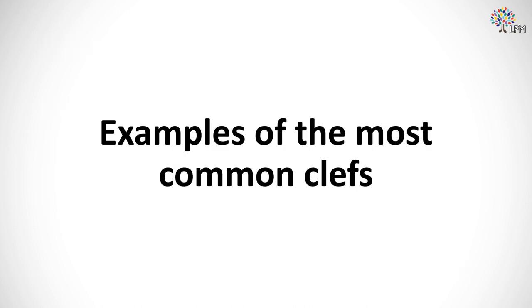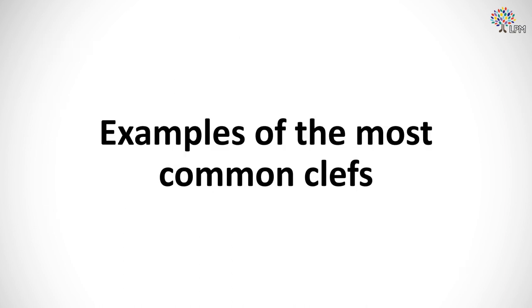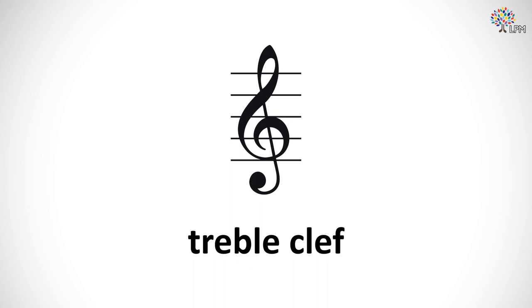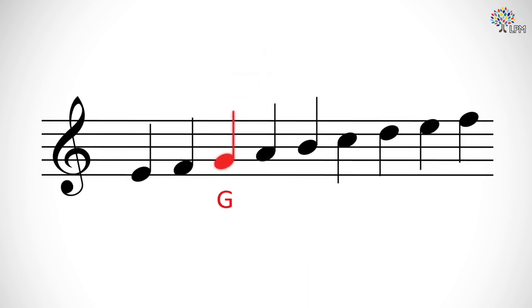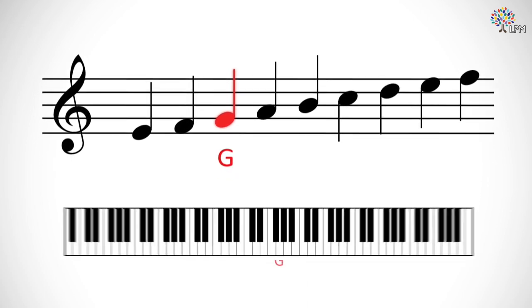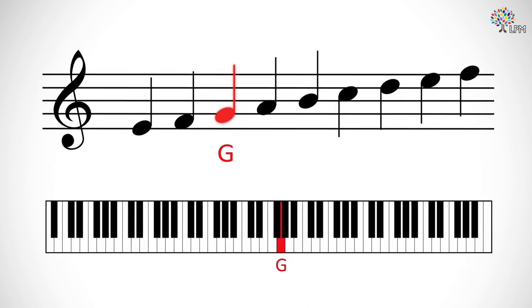Some examples of the two most common clefs. The treble clef, one of the most common clefs you'll see in music that's in higher ranges, marks where the G above middle C is. Basically, if you sit down at a piano and sit right at the middle of the keyboard, this particular G will be almost exactly in front of you. It sounds like this.